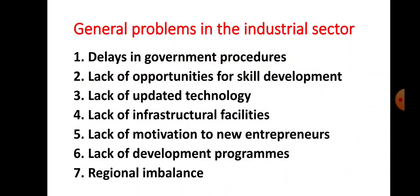Let us see the general problems in the industrial sector. Number one is delays in government procedures. When a person wants to start a business, he has to follow government procedures which are very complicated, tedious, and time-consuming, creating problems at the start of industrial units. Number two is lack of opportunities for skill development. In 2017-18, around 33% of formally trained youth, both men and women, remained jobless, mainly because the skills employers are looking for are lacking in most college graduates.